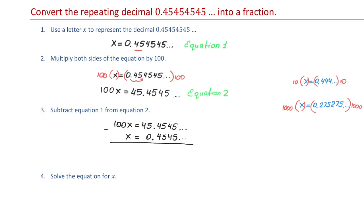On the left side 100X minus 1X is 99X. On the right side 45.45 repeating minus 0.45 repeating will cause the decimal part to cancel and we will be left with 45.